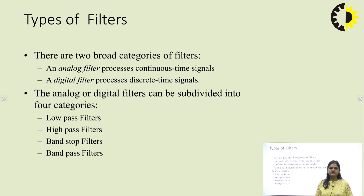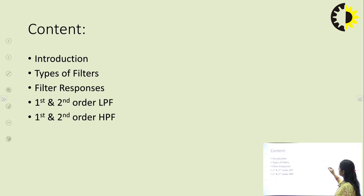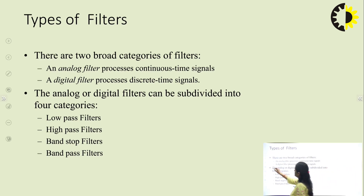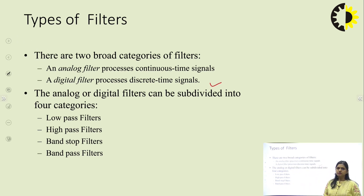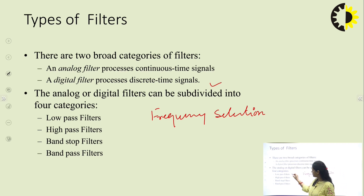If we classify these filters, broadly we can classify them into two categories. One is analog filter — if the input is analog in nature, it is called an analog filter. If the input is digital in nature, the filter is known as a digital filter. Analog and digital filters can be further subdivided into four categories depending on the frequency band.